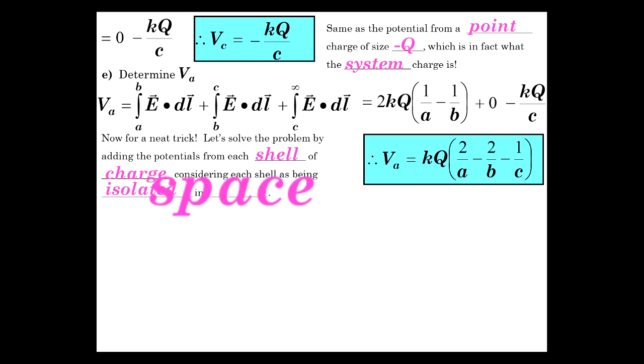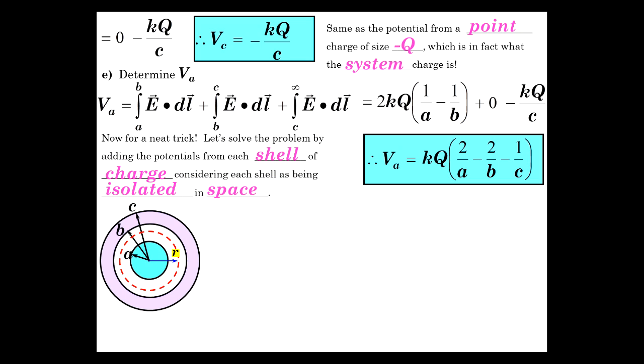We can consider the potentials from each shell of charge and then add them up because it's a scalar quantity. So consider each shell being isolated by itself and what its potential is, and just add them. So let's do that. We have plus 2Q on the outer edge of the inner sphere. What does that mean about the inner edge of the outer sphere? It's got to be the opposite charge, minus 2Q, which leaves one Q, one negative Q left for the outer edge of the outer sphere.